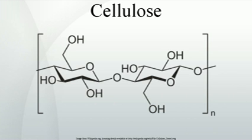The hydroxyl groups of cellulose can be partially or fully reacted with various reagents to afford derivatives with useful properties — mainly cellulose esters and cellulose ethers. In principle, though not always in current industrial practice, cellulosic polymers are renewable resources. Ester derivatives include cellulose acetate and cellulose triacetate, which are film and fiber forming materials. Nitrocellulose was initially used as an explosive and was an early film forming material; with camphor, nitrocellulose gives celluloid. Ether derivatives include sodium carboxymethylcellulose, which can be cross-linked for use as a disintegrant in pharmaceutical formulations.